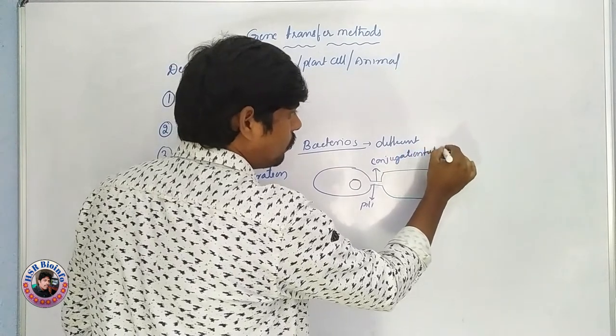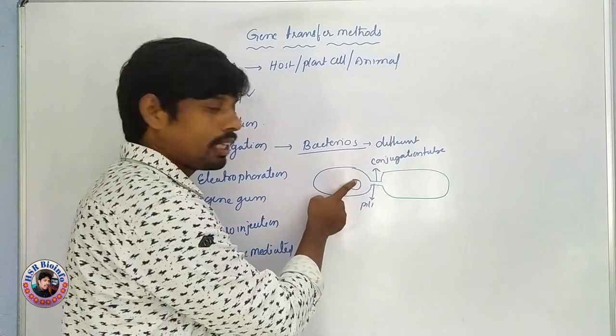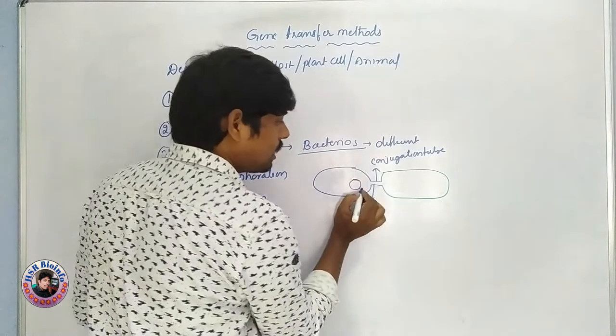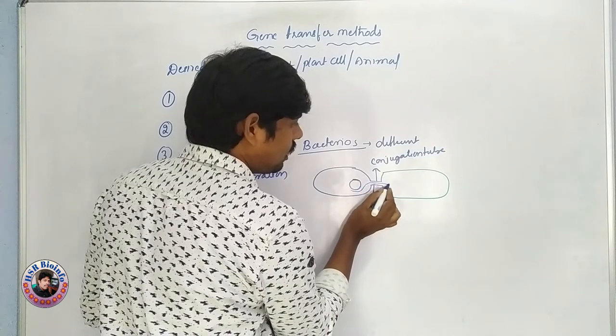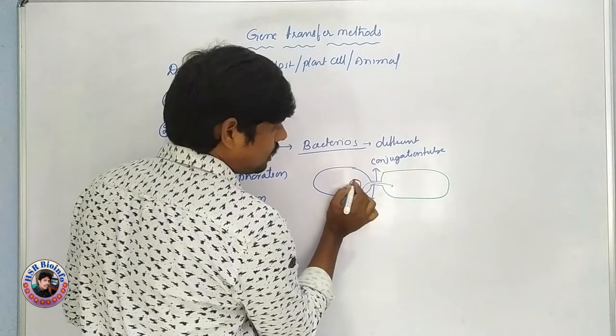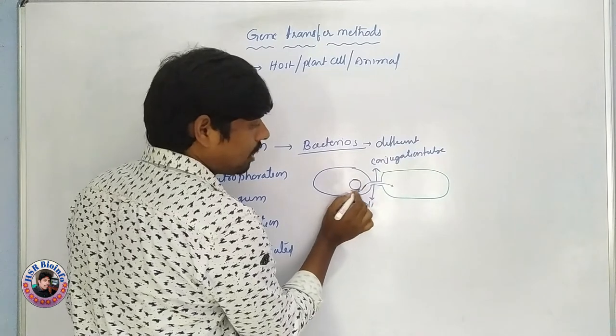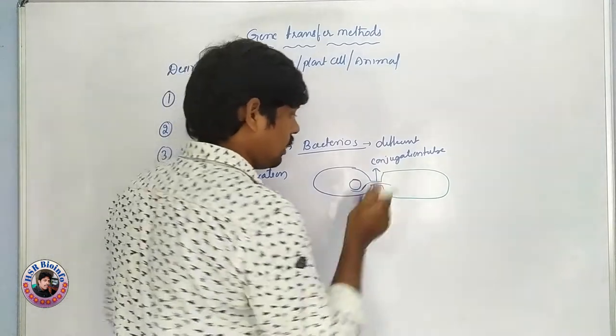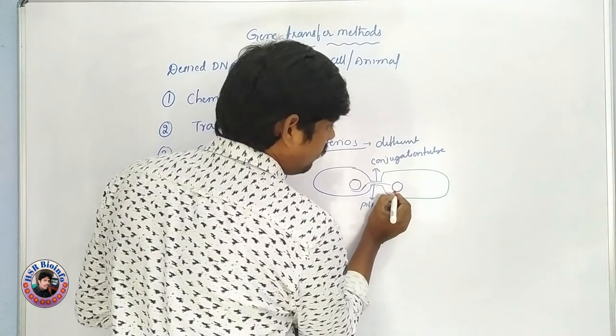Conjugation. This is a plasmid. Plasmid DNA. This gene is called plasmid replication. Plasmid replication, copy number. Replication. Linear replication. Now we are looking at the gene. This gene is going to transfer. This is conjugation.